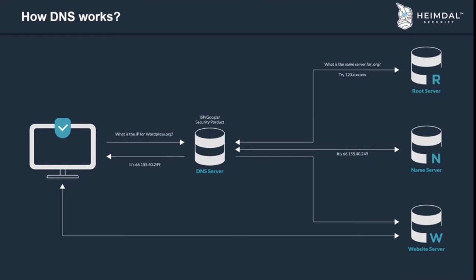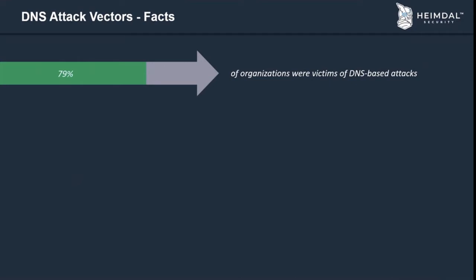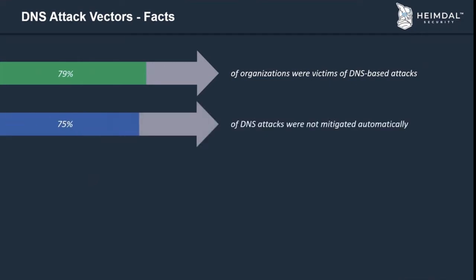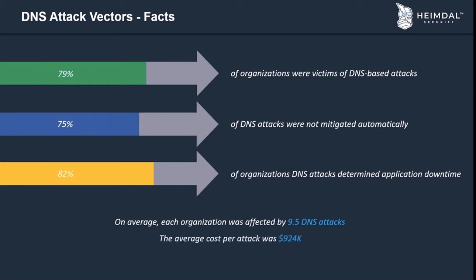DNS is attractive to hackers because it's a vital digital structure and one of the internet's foundations — all information circulating between servers and users travels through DNS, allowing attackers to replicate and scale their operations. According to the IDC 2020 Global DNS Threat Report: 79% of organizations were victims of DNS-based attacks, 75% of attacks were not mitigated automatically, DNS attacks caused application downtime for 82% of organizations, and on average each organization suffered 9.5 DNS attacks with an average cost per attack of around $924,000 USD.